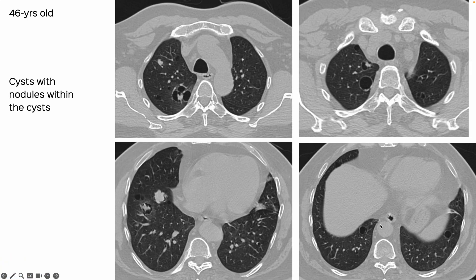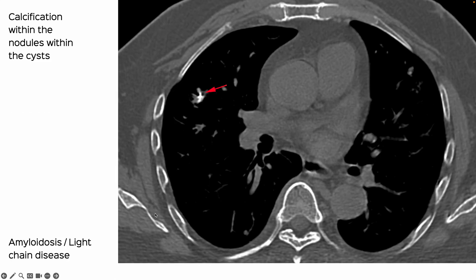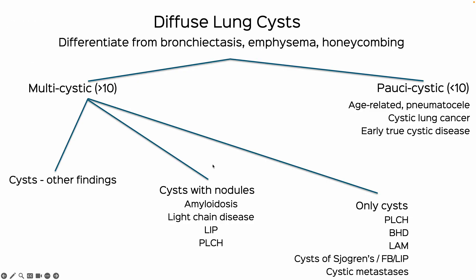This patient has what is called an ant-hill appearance — very pathognomonic. You have cysts with nodules within the cysts. That is very unusual. Whenever we see nodules within the cysts, that pretty much means amyloidosis or light chain disease, and many of these nodules may also be calcified.